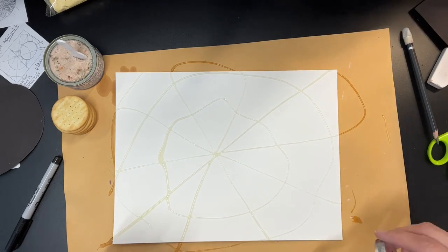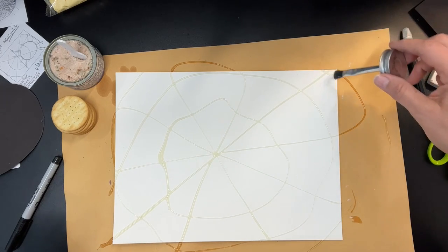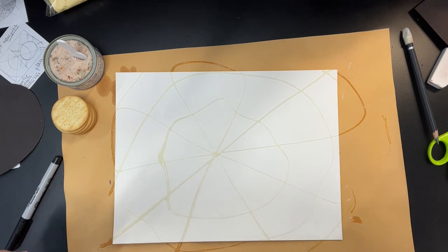We're going to outline these markings with a marker later, so you don't want to go crazy. Just make a few simple lines and a few simple circles.